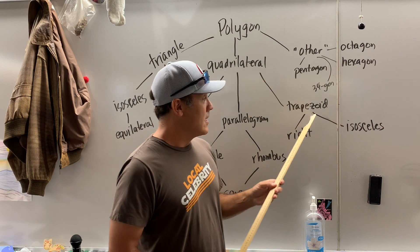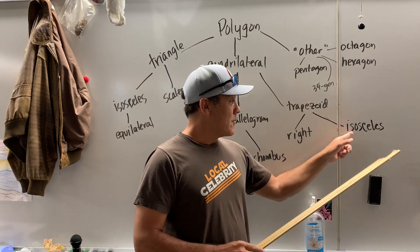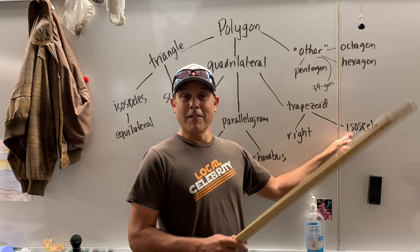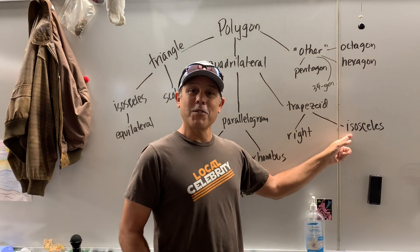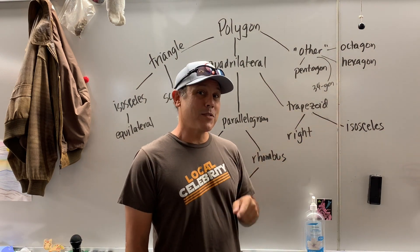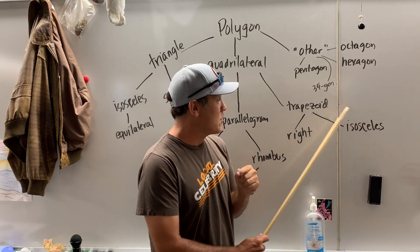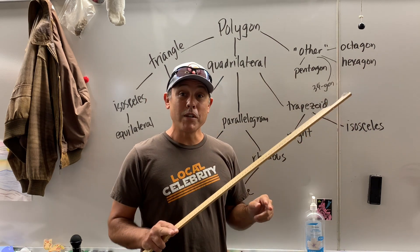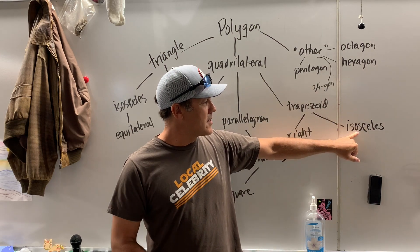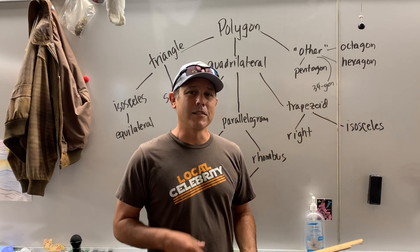And then the trapezoid had one of my favorite shapes. To this day, my son — he just turned 24 years old — the isosceles trapezoid is still his favorite shape. It's a trapezoid with two congruent sides. Why does he love the isosceles trapezoid? Because it's very rarely seen in the wild.